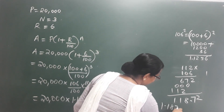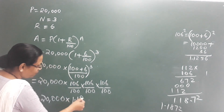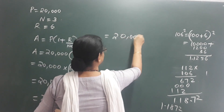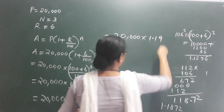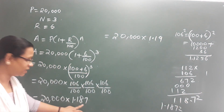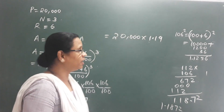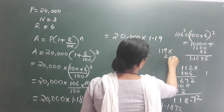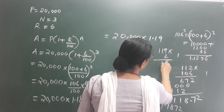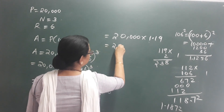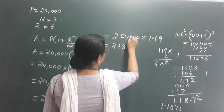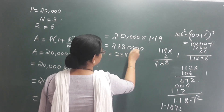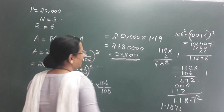After calculating, 1.06 cubed is approximately 1.1872. Putting the amount here: 20,000 into 1.19, rounding for easy multiplication, gives us approximately 23,800 rupees. So the correct amount in the bank after 3 years is 23,800 rupees.